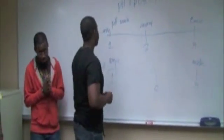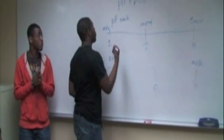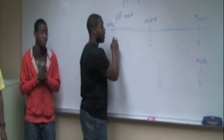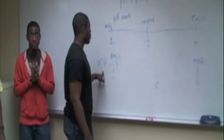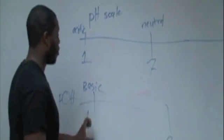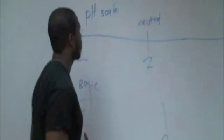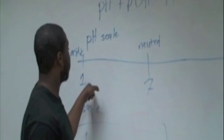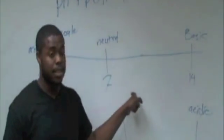In the pH scale, the higher the concentration of hydrogen ions is, the lower it is on the pH scale. And the same thing goes for the pOH scale — the higher the concentration of hydroxide ions are, the more basic the solution is. But as more hydrogen ions get introduced to the solution, it turns more acidic and the scale goes up. And as hydroxide ions get introduced to the pH scale, it becomes more neutral and eventually more acidic.